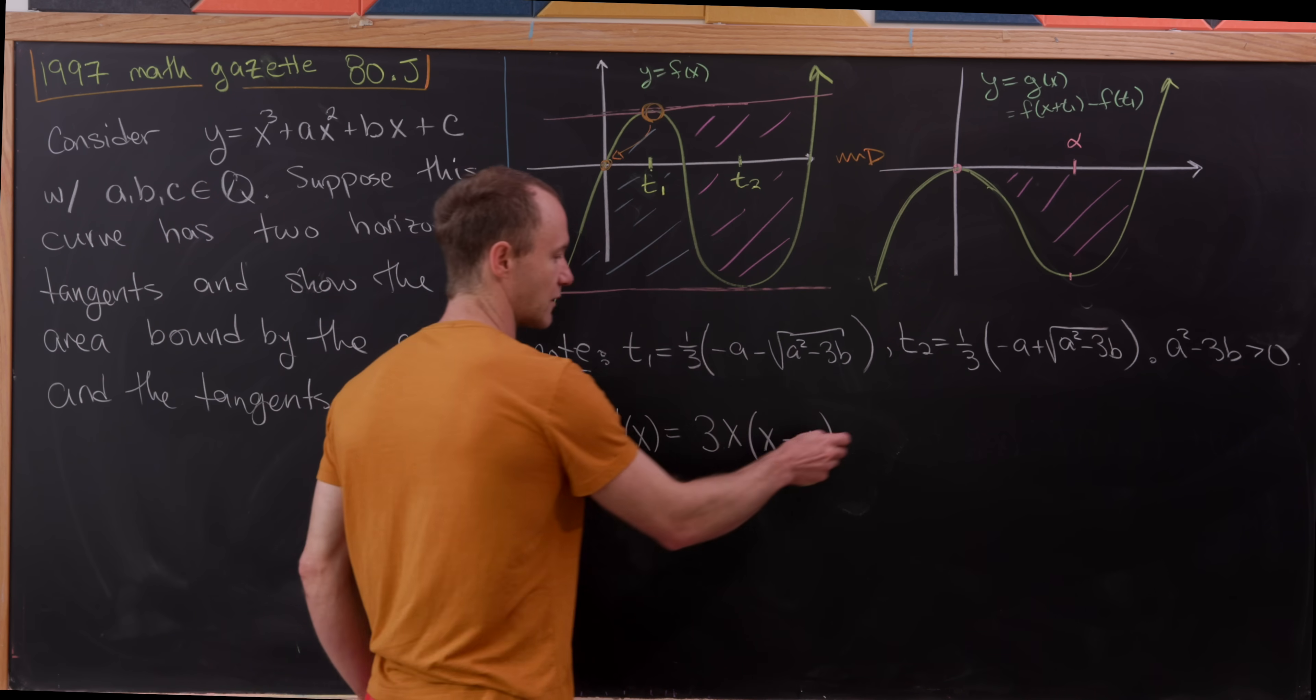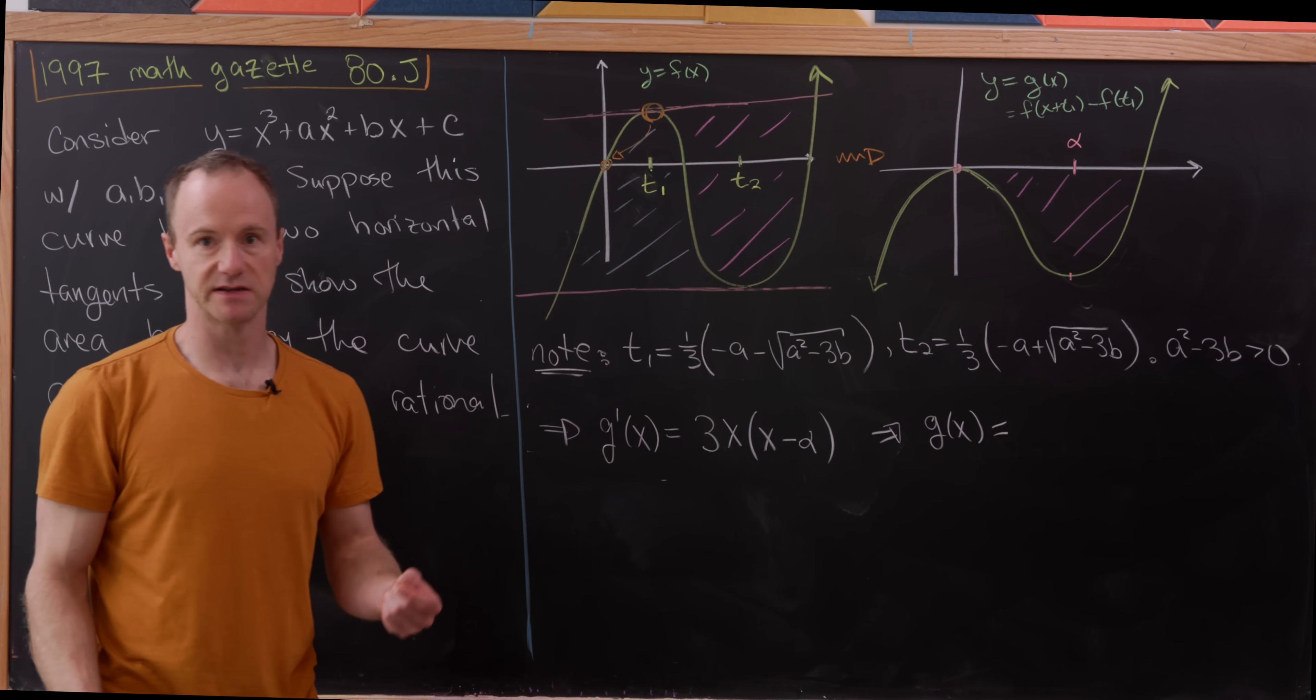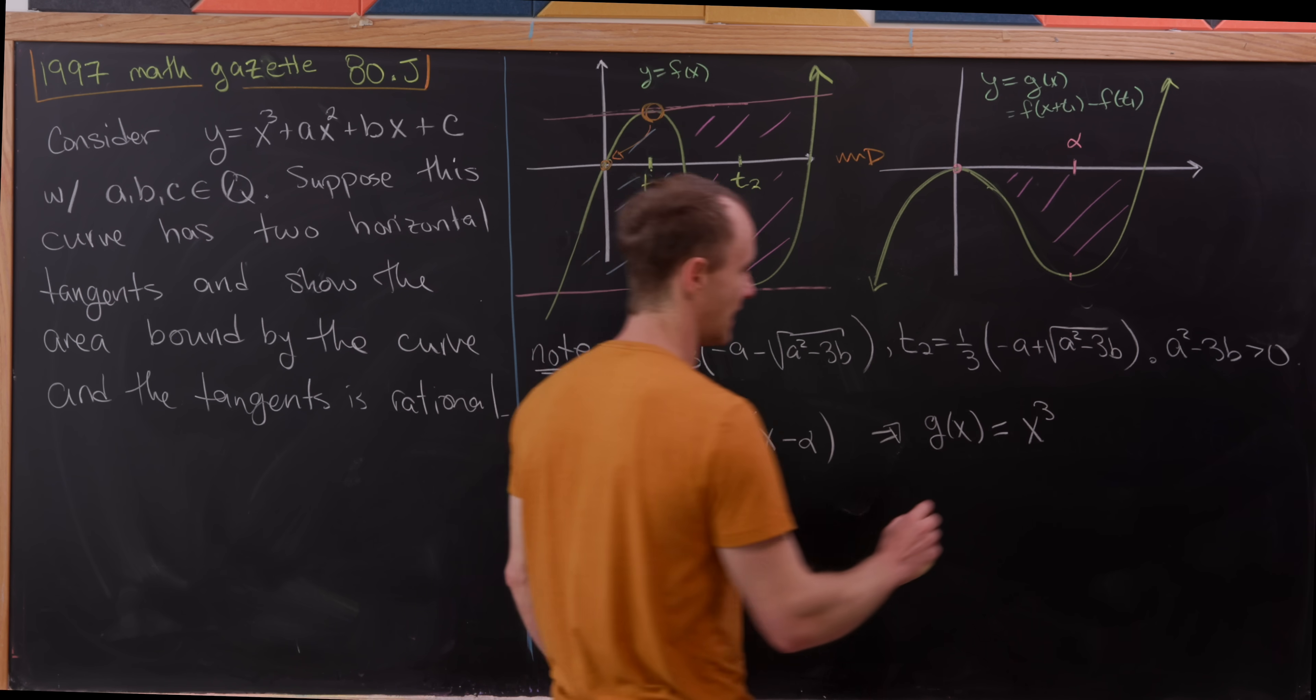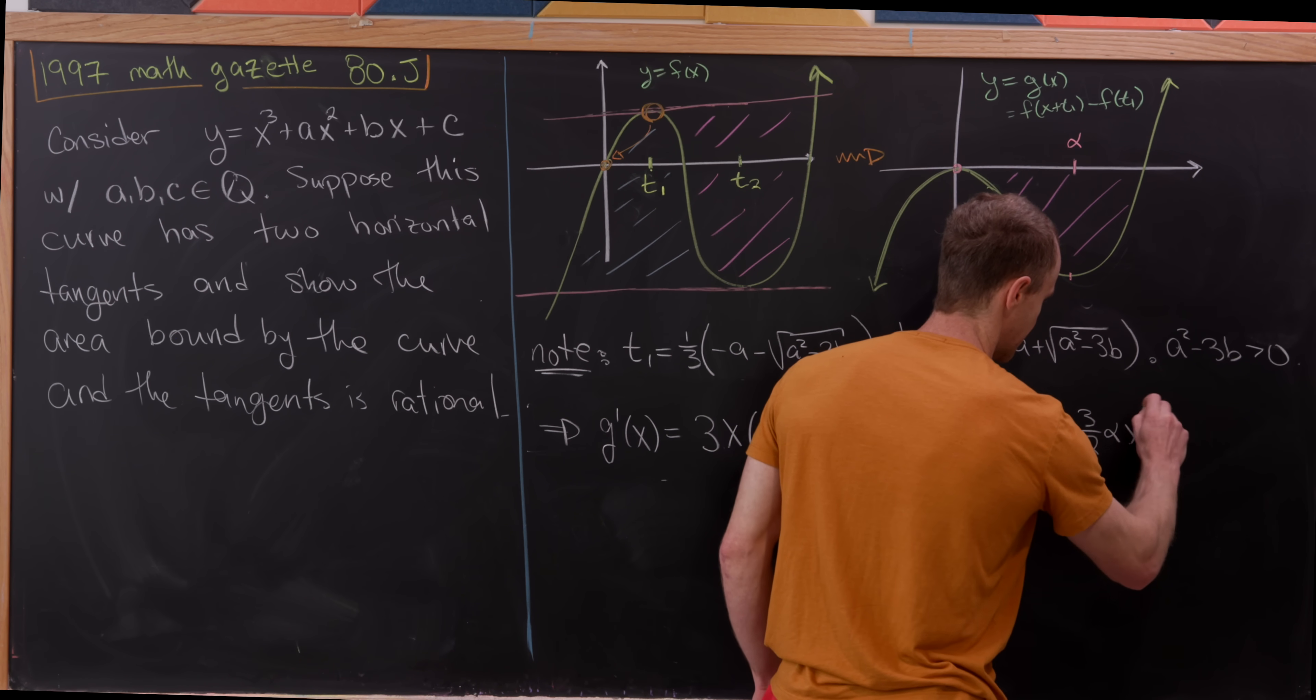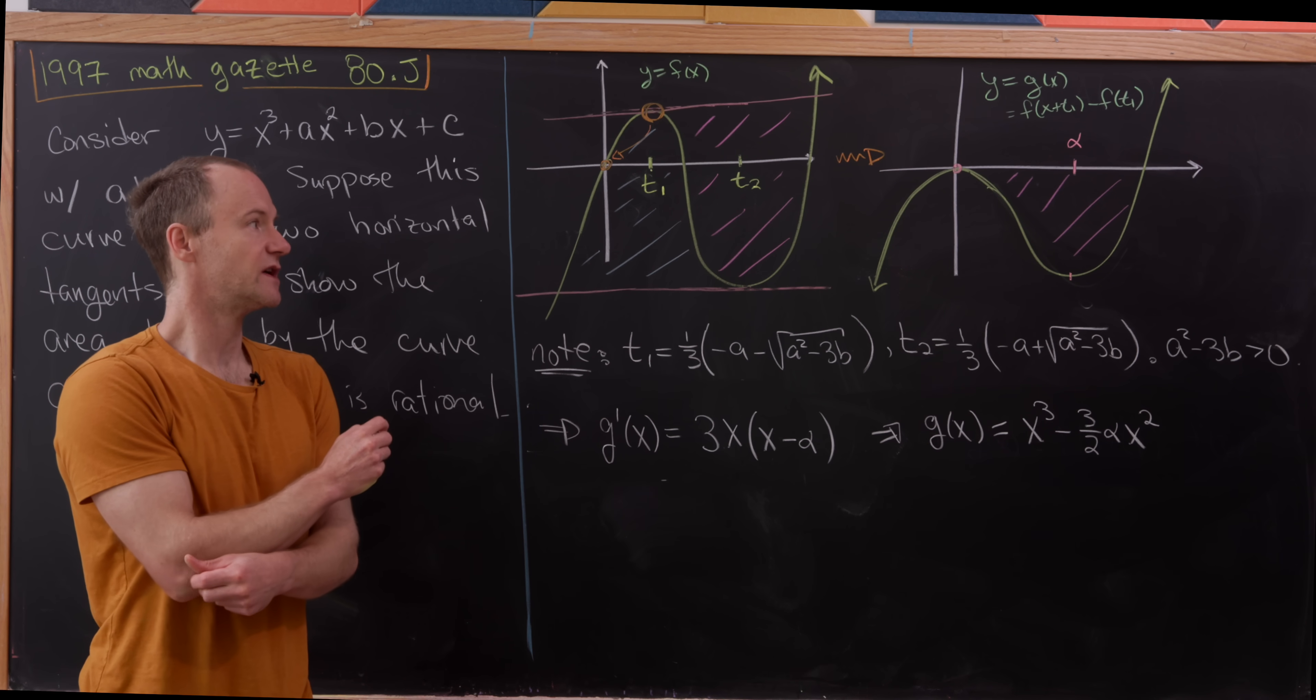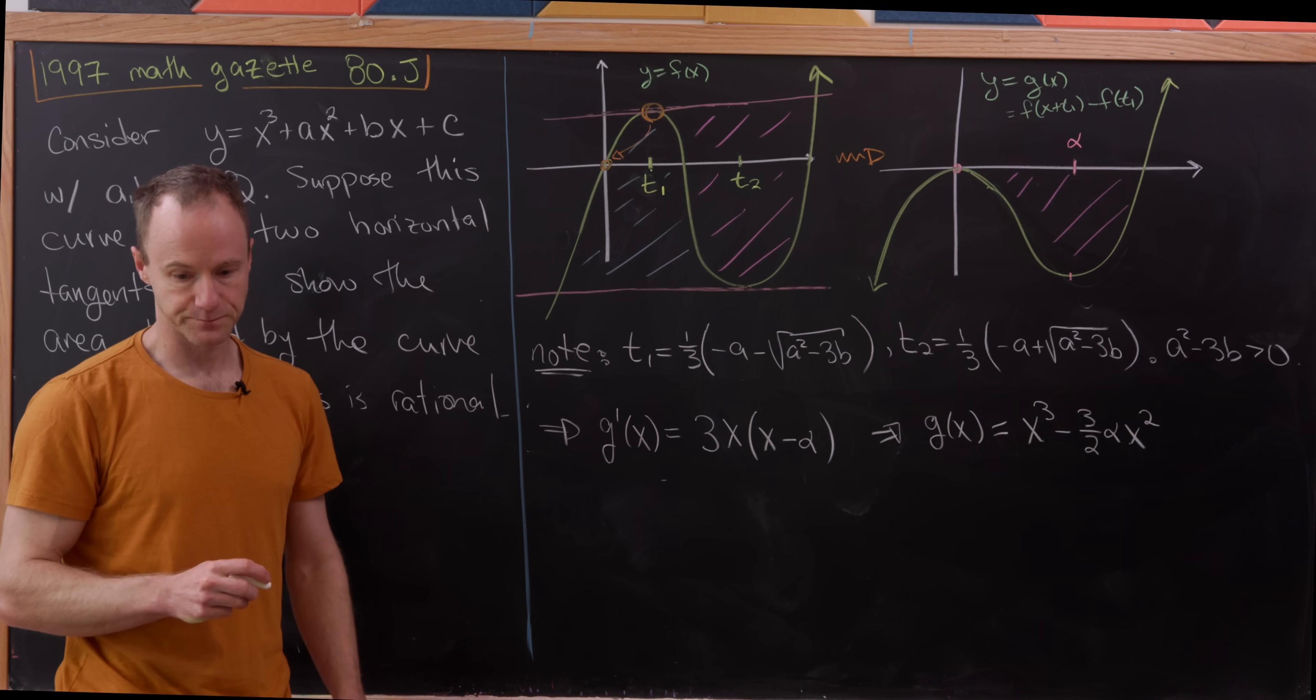But now we can reverse engineer this to a nice equation for g of x, simply by taking the antiderivative. So that's going to give us x cubed, and then we're going to have minus 3 halves times alpha times x squared. Observe that we don't get any constant term, because we know this function g goes to the origin, because of our setup that we've already done here.